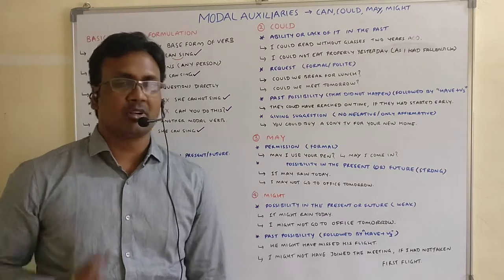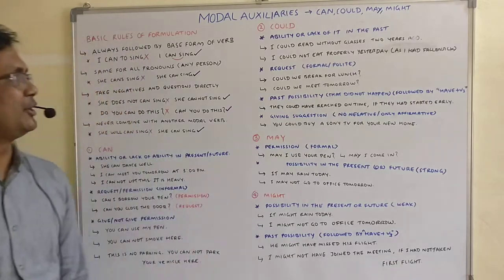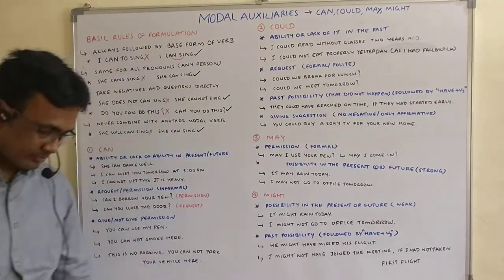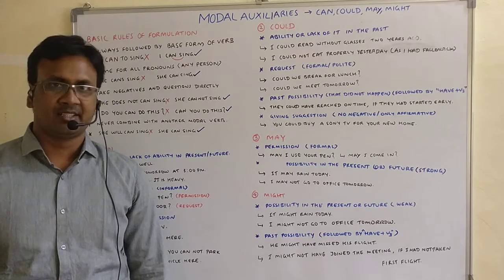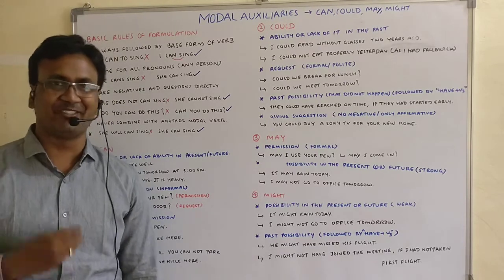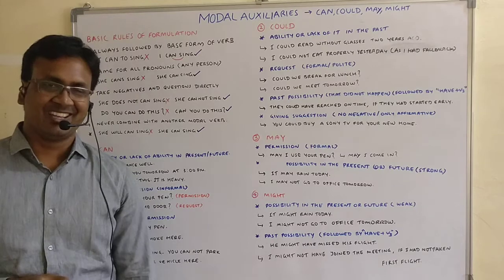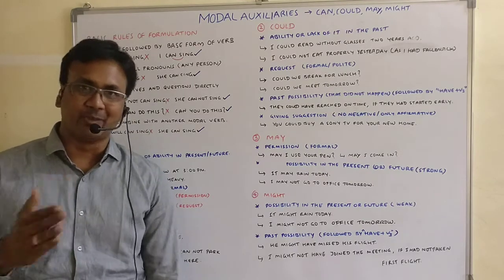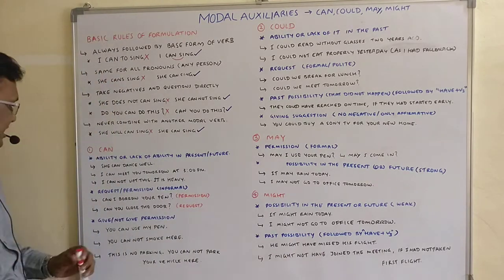So remember these four rules when you are using any of the modal auxiliaries: always followed by base form; same for all pronouns; take negatives and questions directly; and don't combine with any other modal auxiliary. Now let's try to understand the real life uses of these four modal auxiliaries. Let's begin with 'can.' We all use it — knowingly or unknowingly, we overuse can.